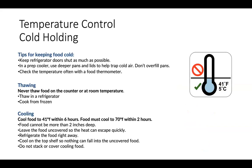Cold holding. Here are some tips to help keep food at 41 degrees or colder. Keep refrigerator doors shut as much as possible. In a prep cooler, use deeper pans and use lids to help trap the cold air. Do not overfill pans. Remember to check the temperature often with a food thermometer. When thawing food, never thaw food on the counter at room temperature. Plan ahead to thaw the food overnight or for several days in the refrigerator. You may also cook food from a frozen state.